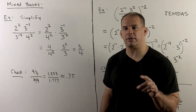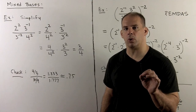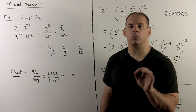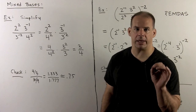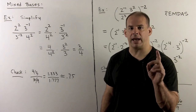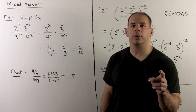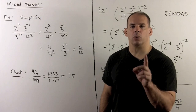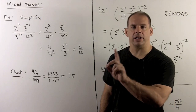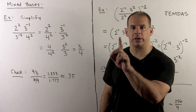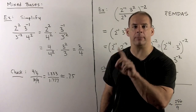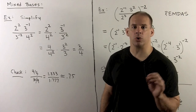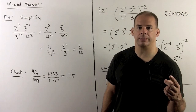Now that we have some comfort level with exponent rules over like bases, we'll move on to mixed bases. The main idea here: we take our expression, we separate it into two factors — just separate by the base — and then we apply our rules for like bases.